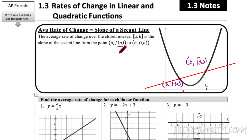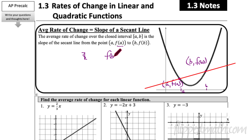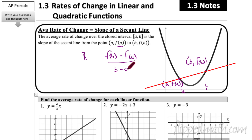Using the notation (a, f(a)) and (b, f(b)), we write the slope as f(b) minus f(a) over b minus a — that's change in the dependent variable over change in the independent variable. That's the formula for average rate of change.